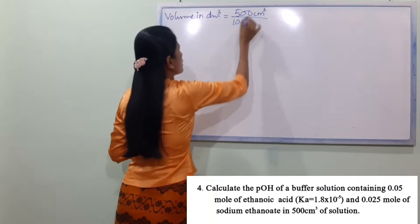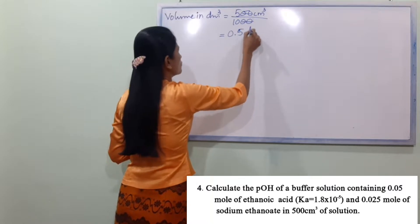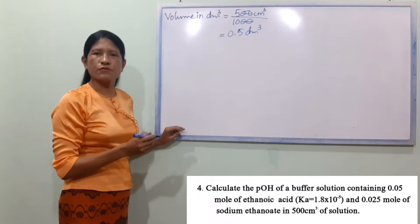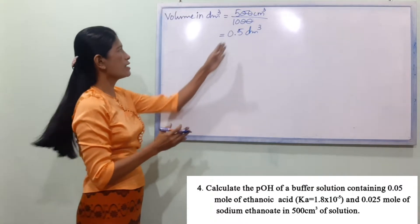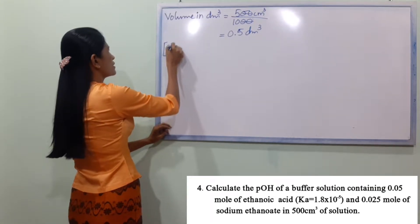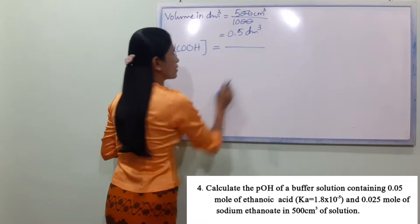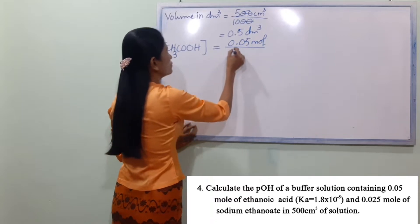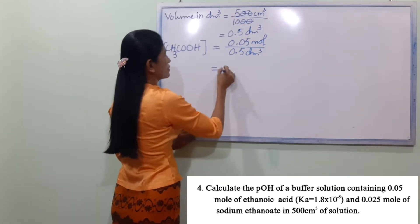So we find the concentration of ethanoic acid. Since the solution volume is 0.5 dm³, the concentration of CH₃COOH equals 0.05 mol divided by 0.5 dm³.